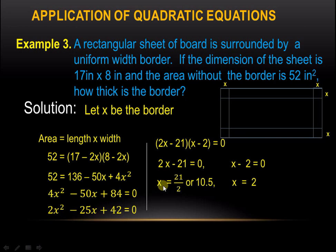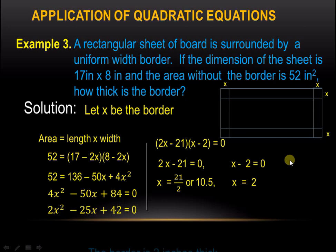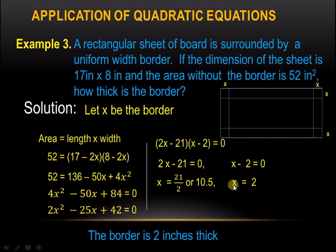Solving for x, we get x equals 21 over 2, or 10.5, and x equals 2. Are we going to consider both? The answer is no — we only consider x equals 2. The reason is that when we subtract 10.5 from 8, the result becomes negative. Therefore, the border is 2 inches thick.